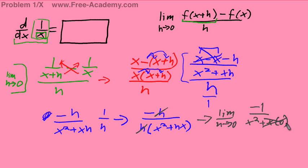And of course this term drops out, giving us the answer of negative 1 over x squared. So the derivative of 1 over x equals negative 1 over x squared.